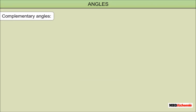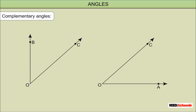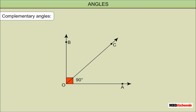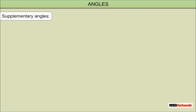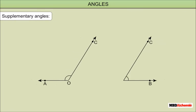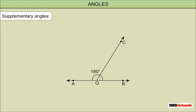Complementary Angles: Two angles whose sum is 90 degrees are called complementary angles, and either is called the complement of the other. Supplementary Angles: Two angles whose sum is 180 degrees are called supplementary angles, and either is called the supplement of the other.